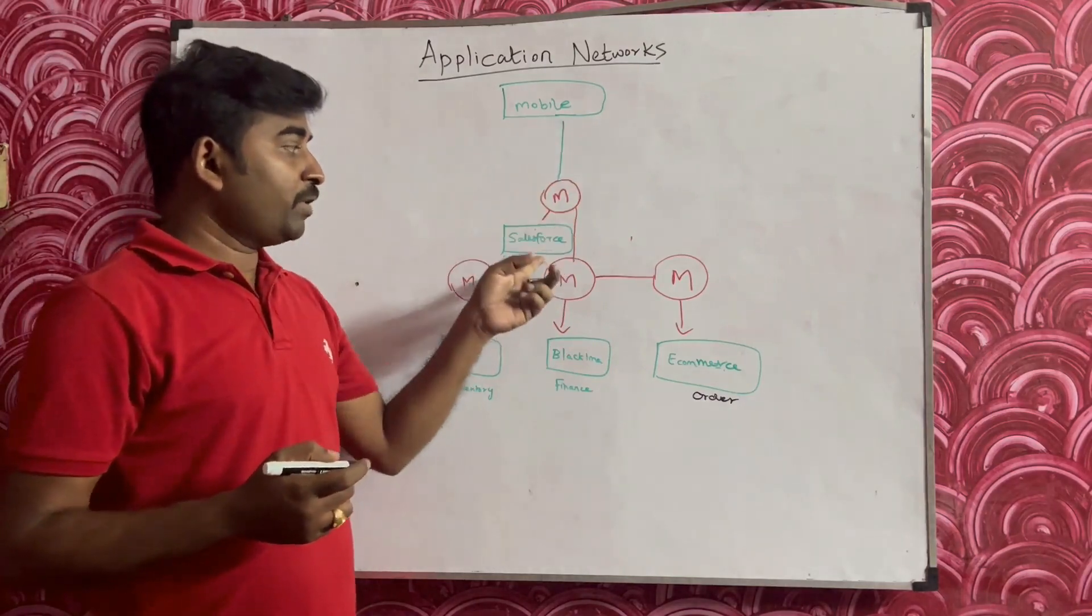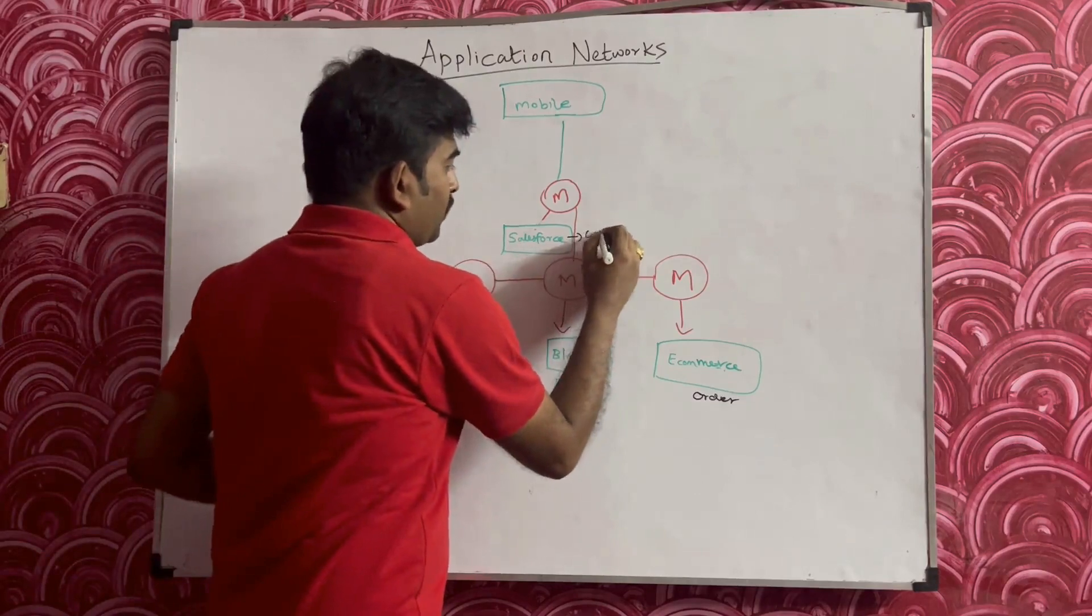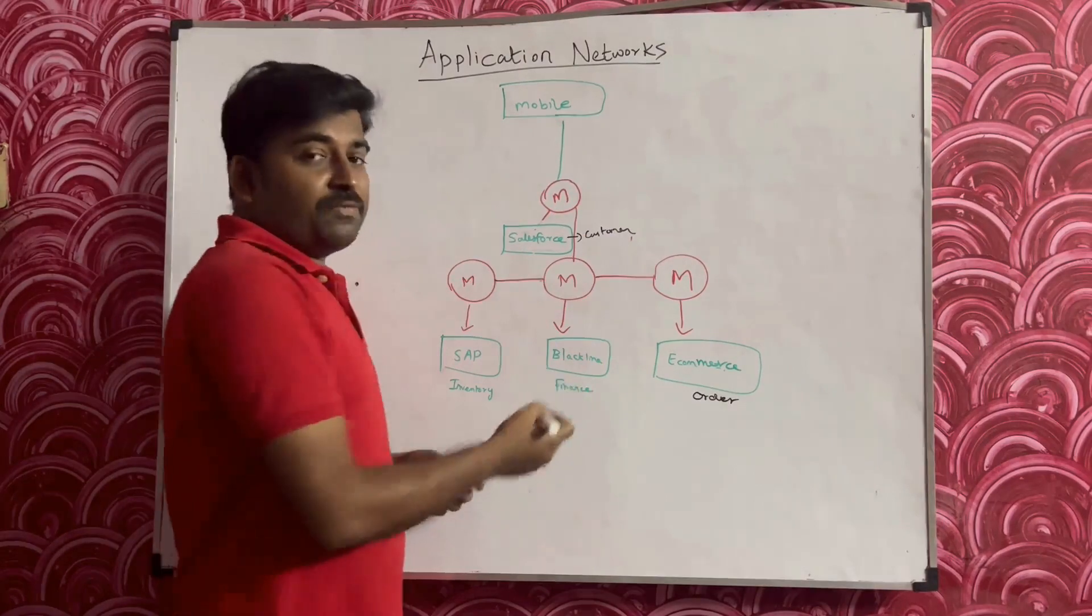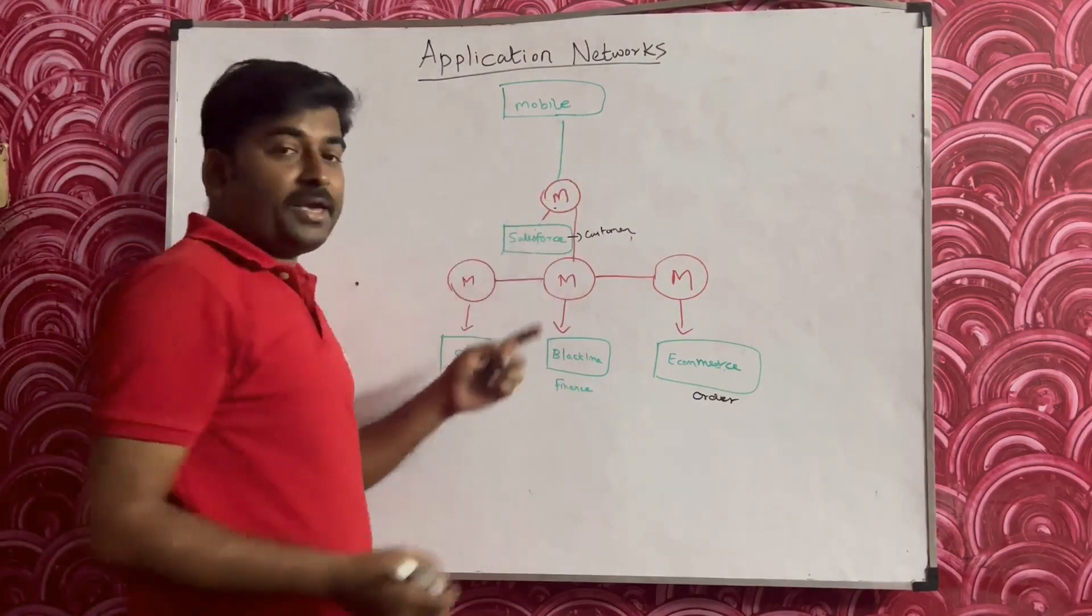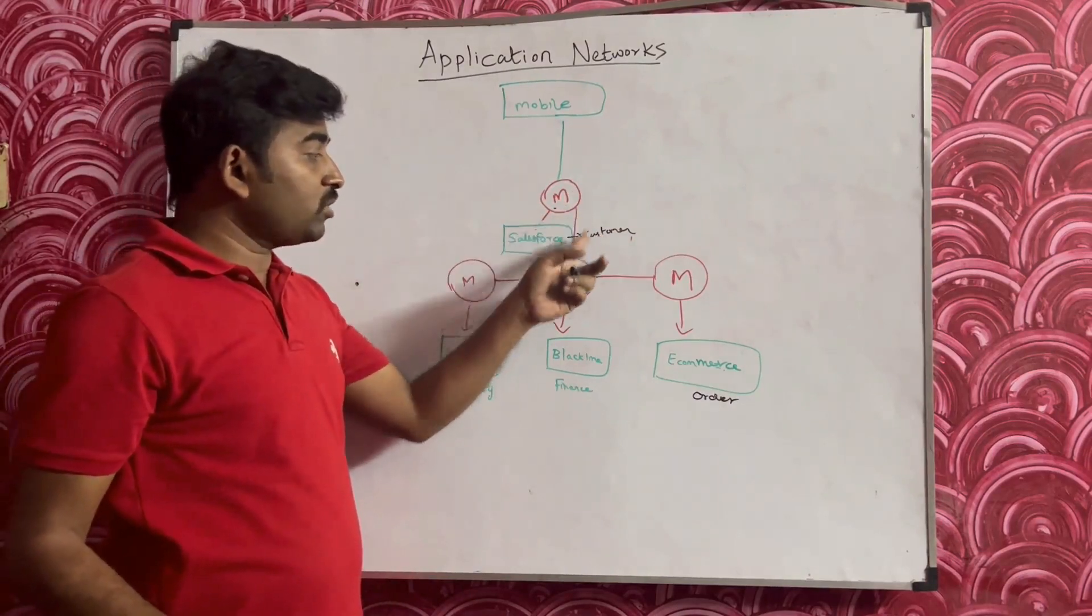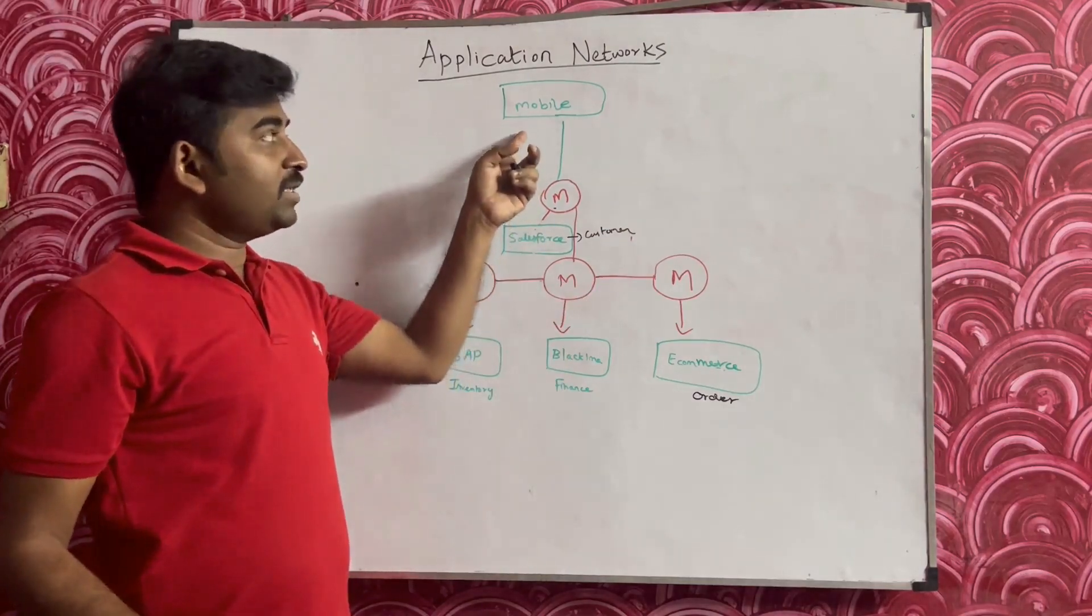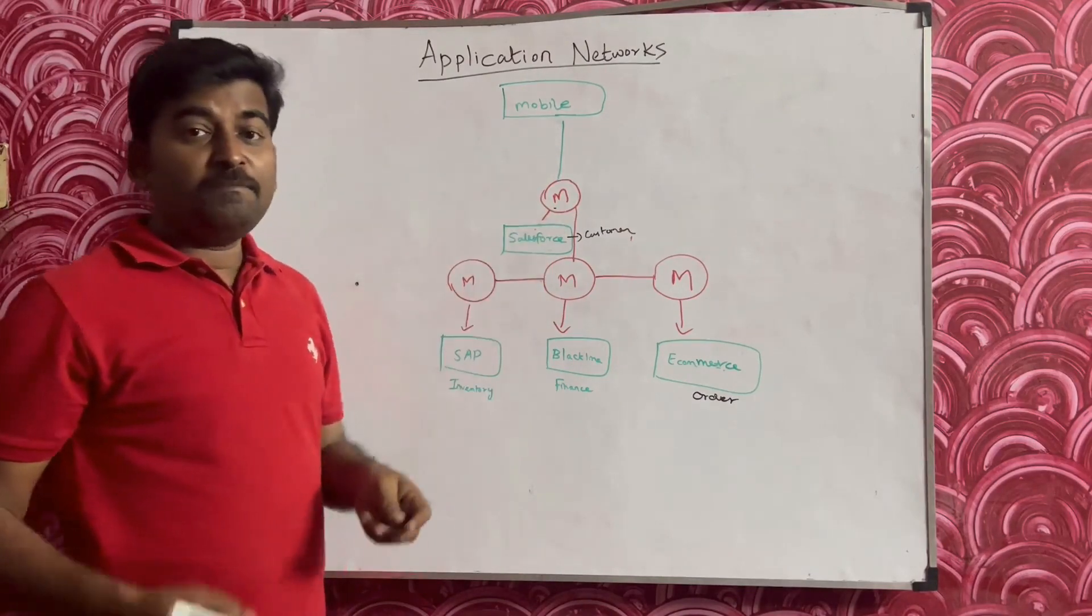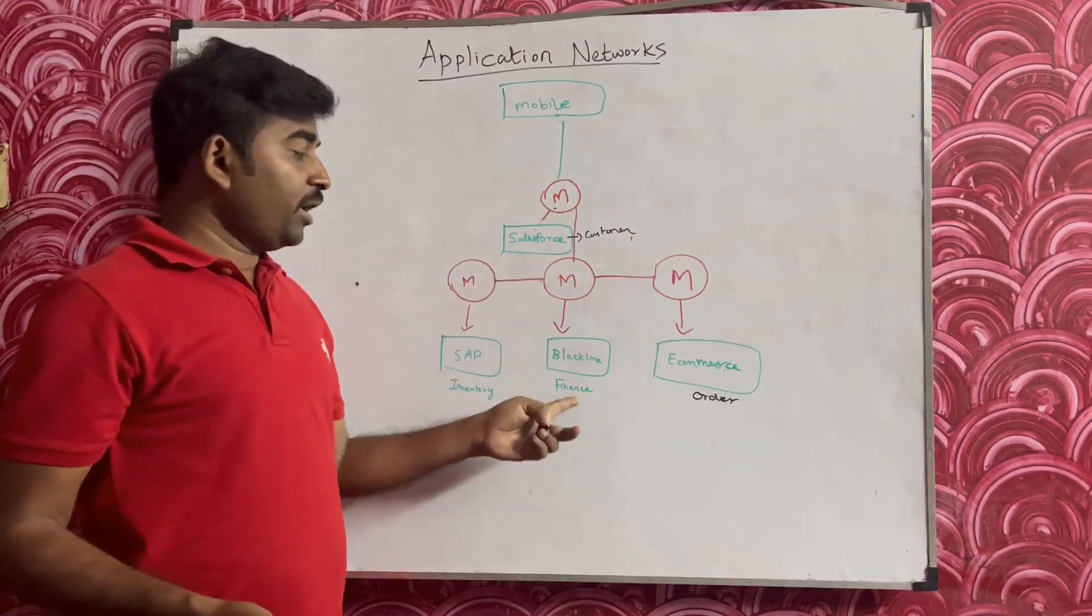For example, I need data for mobile API from Salesforce. Assume this is customer data. Mobile needs customer information and also for that particular customer I need some financial record as well. In that case I can call this particular API, this particular MuleApp, internally connecting to Salesforce and also calling another MuleApp which is talking to Blackline. Here what is happening is this particular mobile API is calling a Mule API which is helping to talk to two different applications - Salesforce and Blackline.